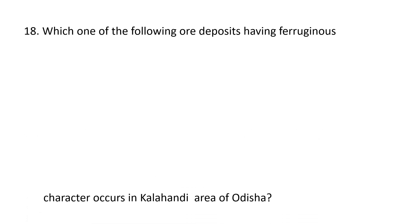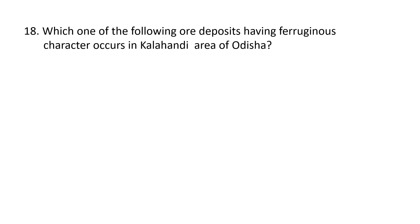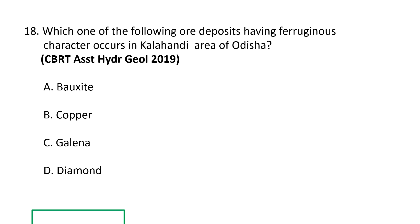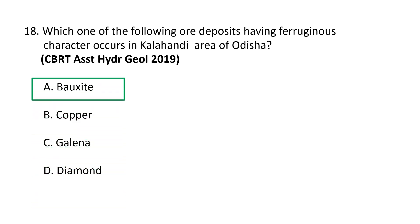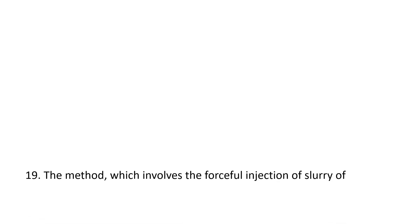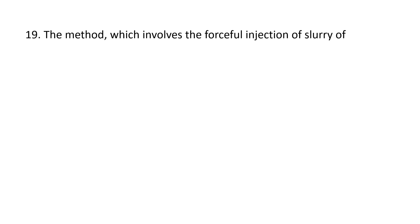Next question: which of the following deposits having ferruginous character occur in the Kalahandi area of Odisha? A) Bauxite, B) Copper, C) Galena, D) Diamond. The correct option is bauxite. Kalahandi is famous for the production of bauxite. It is located in Odisha; other bauxite deposits in India are also seen in Sambalpur. A, bauxite, is the correct answer.